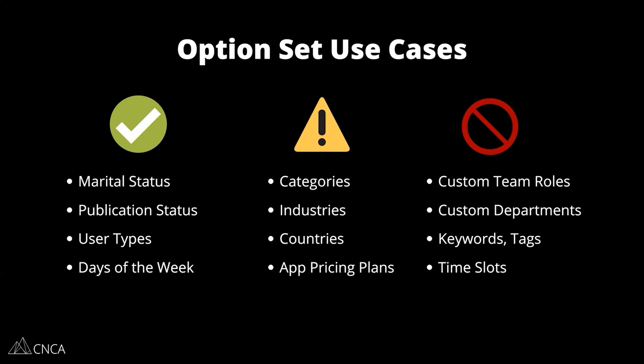Marital status, publication status — draft, archive, publish — and user types. So if you have multiple user definitions, like in a marketplace with buyers and sellers, notice the common trend: these are very contained lists with only a few choices, options that are not going to change. Once you set them up, they're pretty much the same all the time, and your users don't need to have control over these choices.